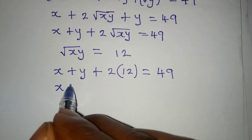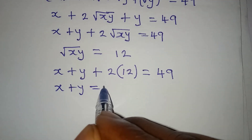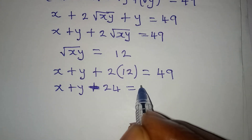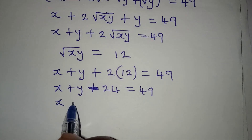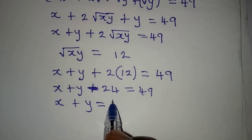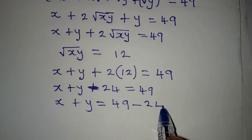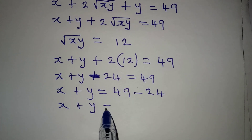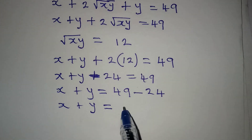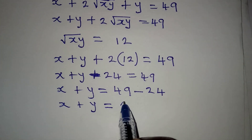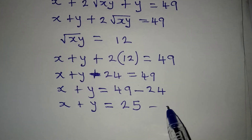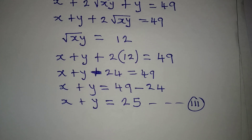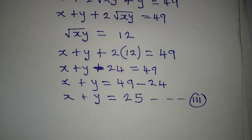From here, x plus y plus 24 equals 49, so x plus y equals 49 minus 24, which gives us x plus y equal to 25. Let's call this equation 3, since we already have equations 1 and 2.